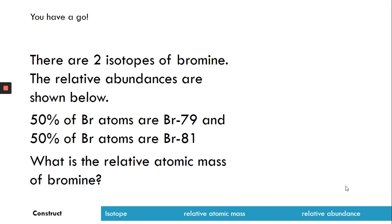So I'd like you guys to have a go at this one for me, please. Use that formula that was on the last slide. Hopefully you wrote that down. So it says there are two isotopes of bromine. The relative abundances are shown below. So 50% of the bromine atoms are bromine-79, and 50% of the bromine atoms are bromine-81. So please work out the relative atomic mass of bromine. If you need to pause it and have a go, then do so.